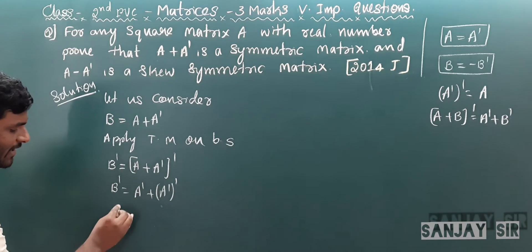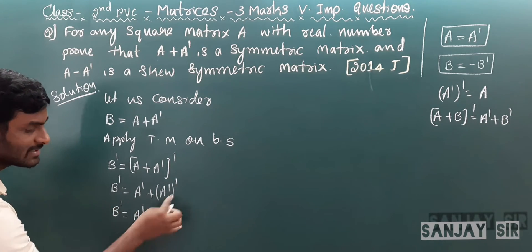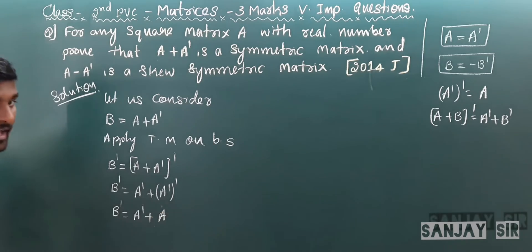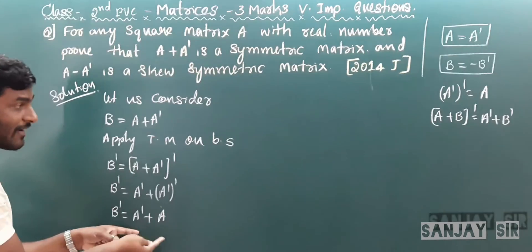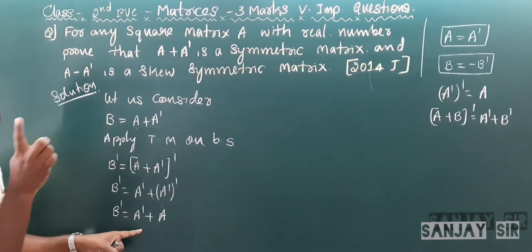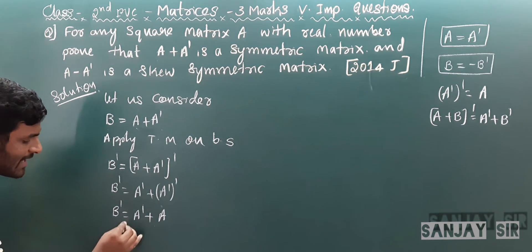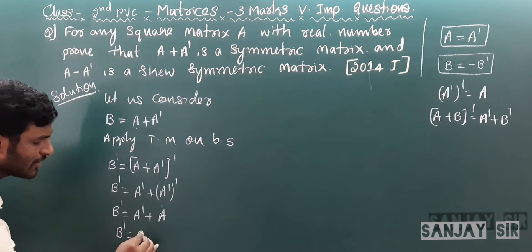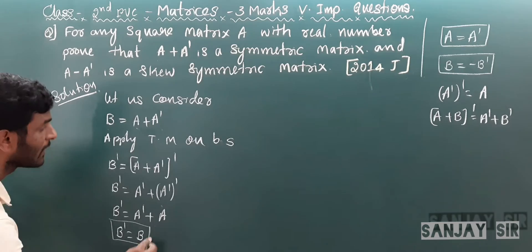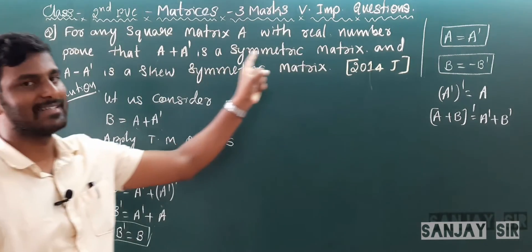B' = A' + (A')' = A' + A. But we considered B = A + A', so B' = B. Hence A + A' is a symmetric matrix.